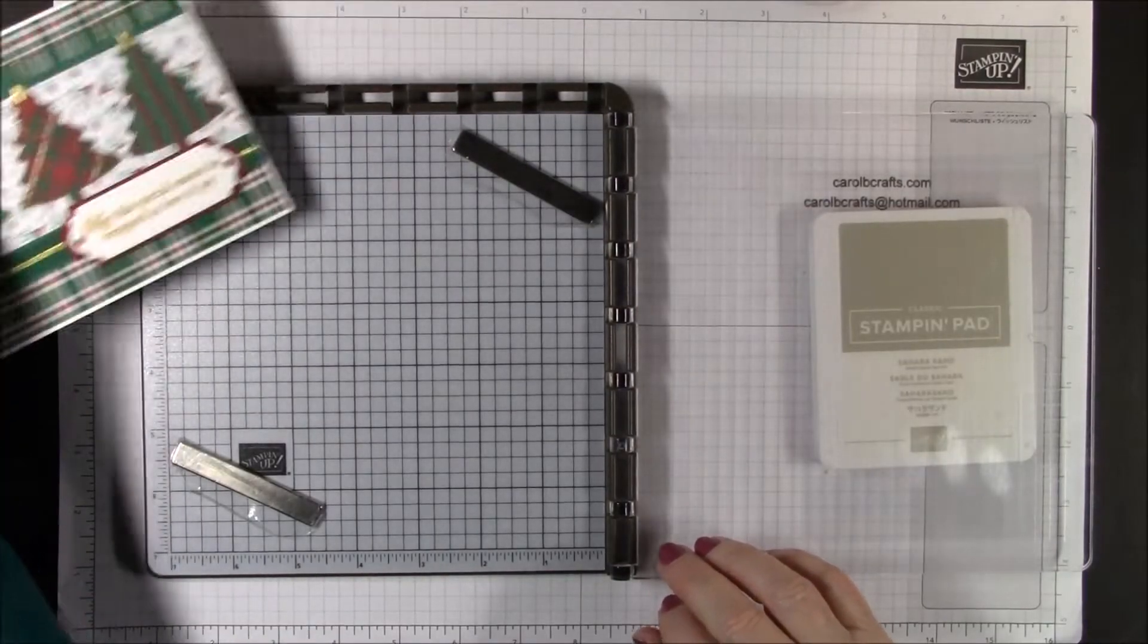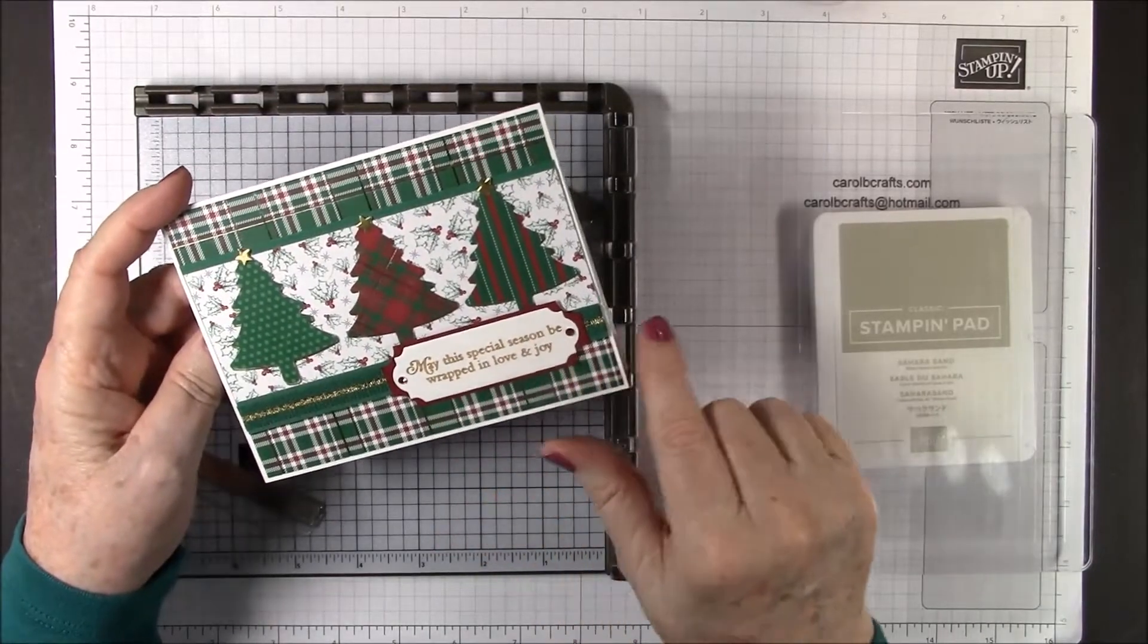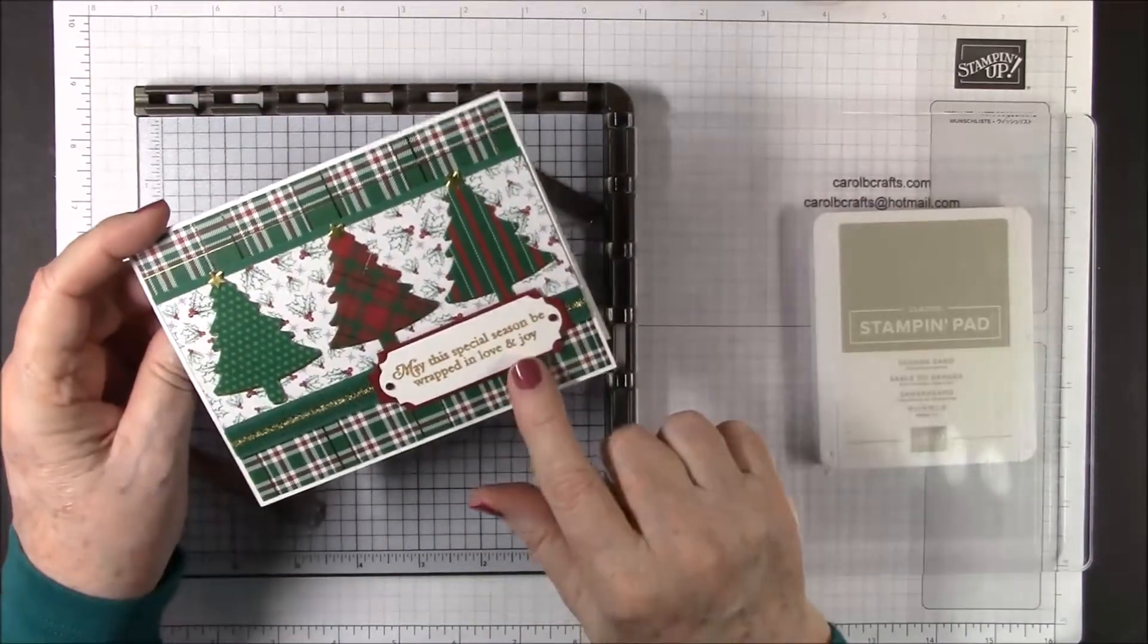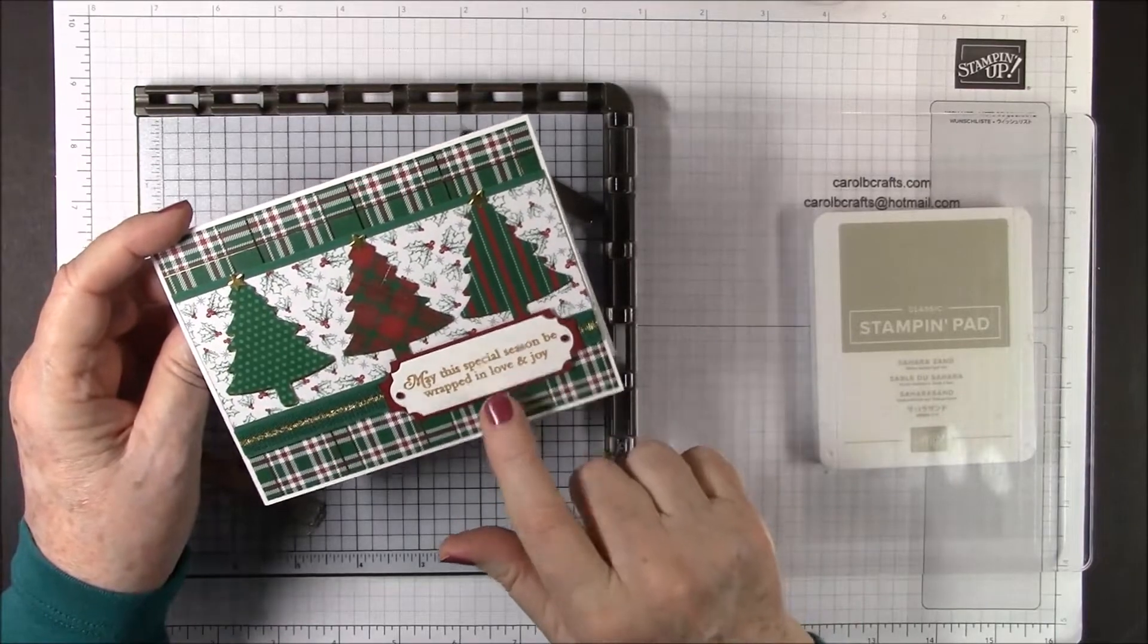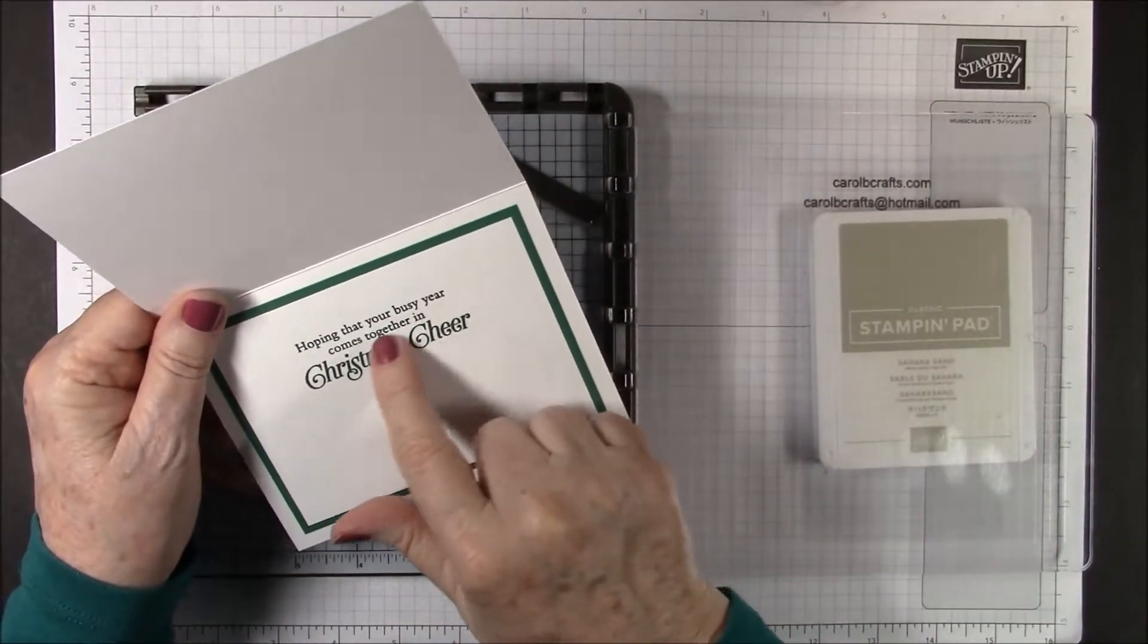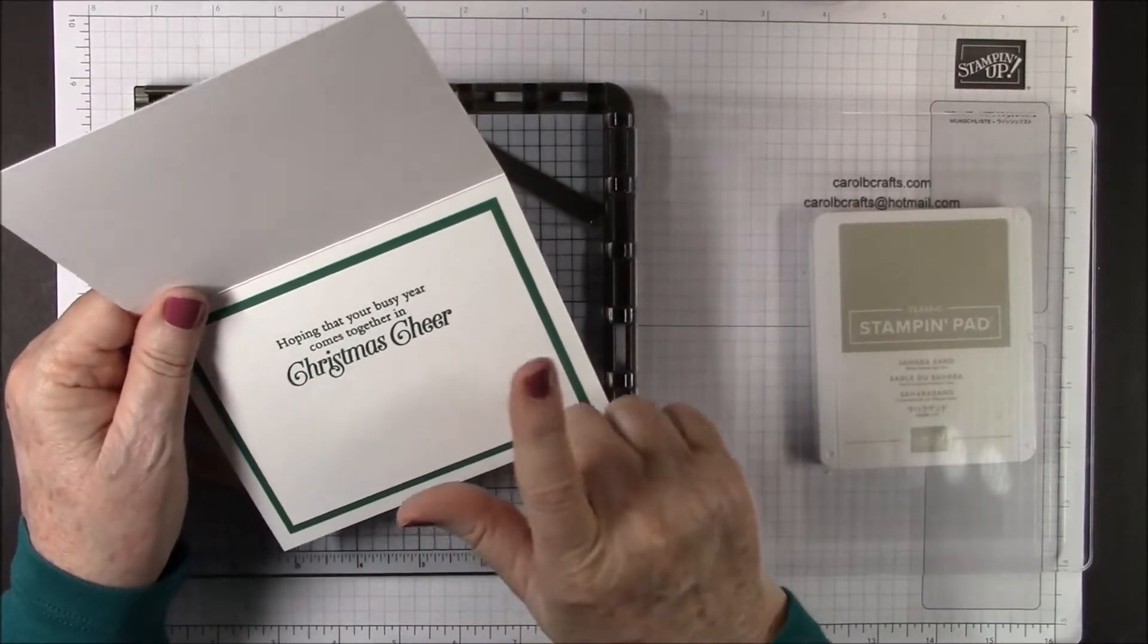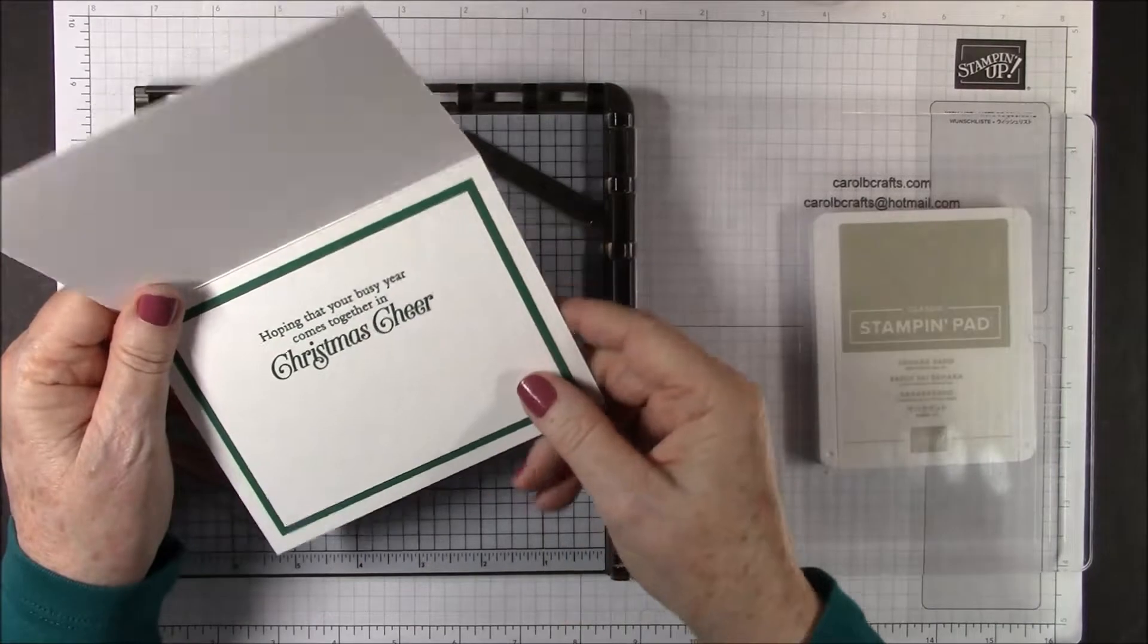We only have a little bit of stamping to do. We're going to stamp the "May this special season be wrapped in love and joy" in our delicata golden glitz ink, and then stamp "hoping that your busy year comes together in Christmas cheer" in our shaded spruce.